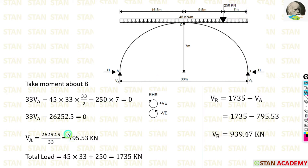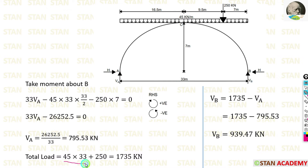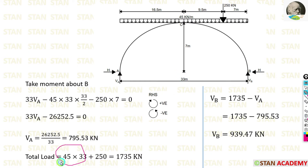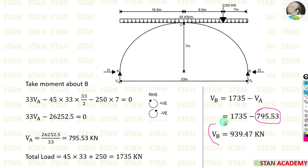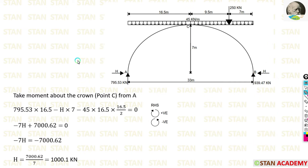Using the calculator, we find VA = 795.53 kilonewton. To find VB, we calculate the total load: 45×33 + 250 = 1735 kilonewton. Then VB = total load minus VA = 1735 minus 795.53, giving VB = 939.47 kilonewton.